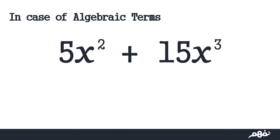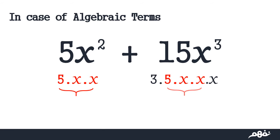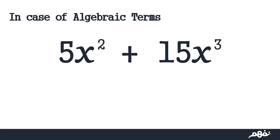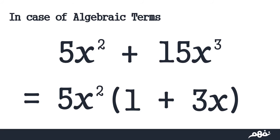What if it wasn't a number but an algebraic term? In the case of algebraic terms, I do the same thing. I first have to simplify: 5x² + 15x³ equals 5 times x times x, plus 3 times 5 times x times x times x. It is clear now that 5 times x times x — that is, 5x² — is the highest common factor. So I take out the HCF and multiply it by the result, which equals 1 for the first term and 3x for the second term. So 5x²(1 + 3x) is equivalent to 5x² + 15x³.